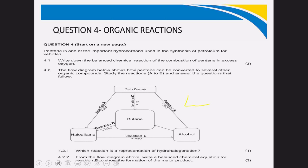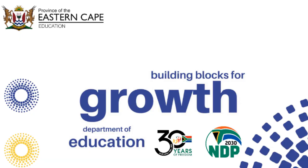In our last lesson we will look at question number three and question number four — how to analyze the flow diagram, for example from butane to haloalkane to alcohol, knowing all organic reactions. I wish you all the best as you are preparing for your examination on the 11th. Thank you.